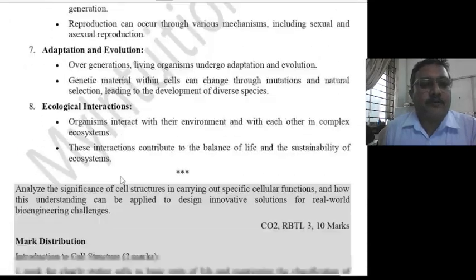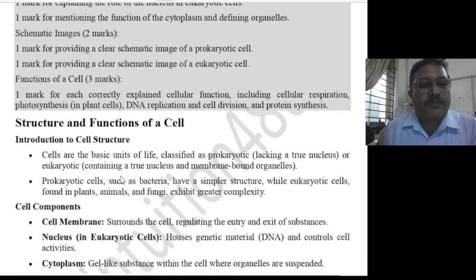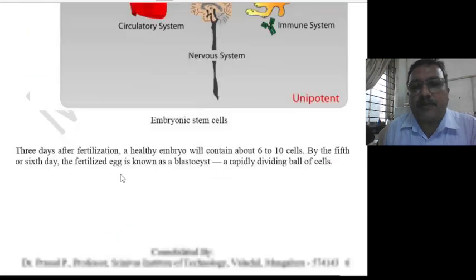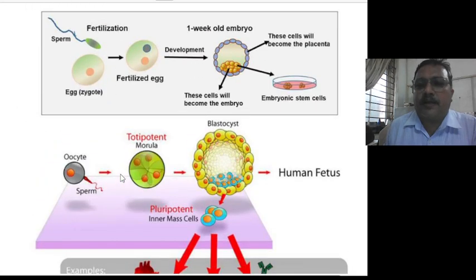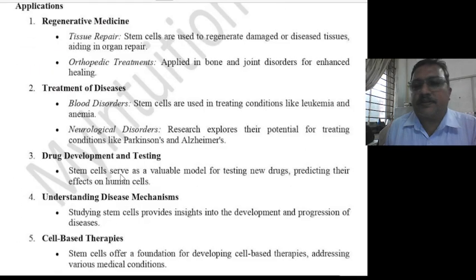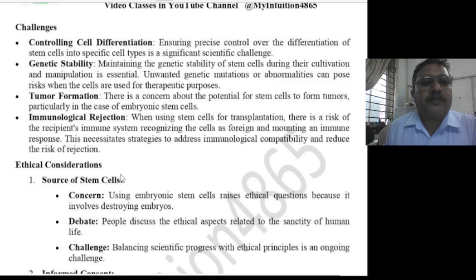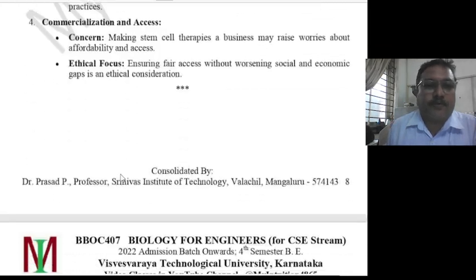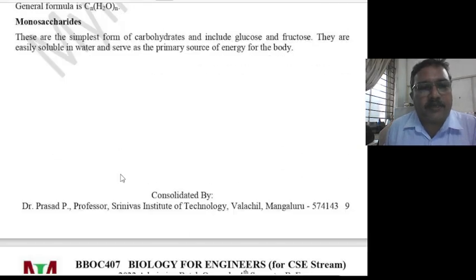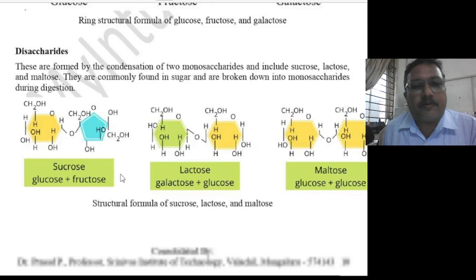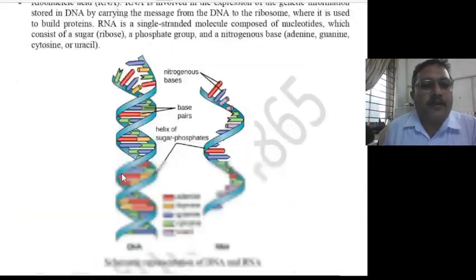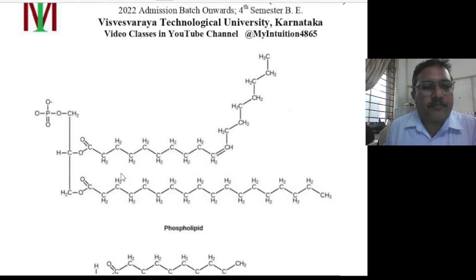This is module one for the computer science stream, covering the function of a cell with images provided for reference to aid understanding. Things are presented in the simplest way possible to help recall. Some reference material is included for background reading, but the remaining content is all in question-and-answer format only.